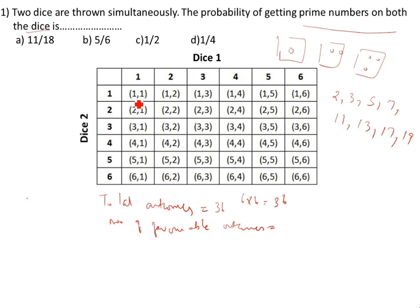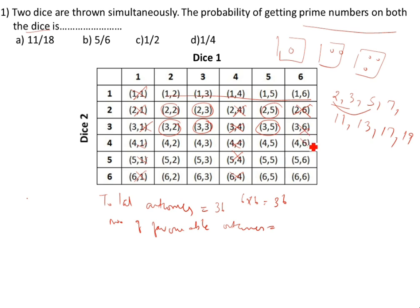Both dice should show prime numbers. See 1 — 1 is not a prime number, so strike out any pair with 1. For 2,2 — yes; 2,3 — yes; 2,4 — no, 4 is not prime, strike it out. 3,1 — no, strike out. 3,2 — yes; 3,3 — yes; 3,4 — no, 4 is not a prime number so that won't come. 3,5 — yes; 3,6 — no, 6 is not prime, strike it out.